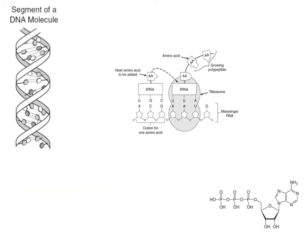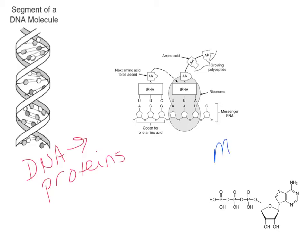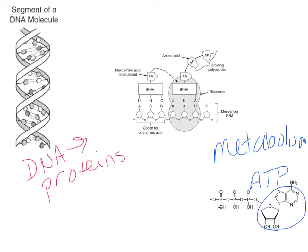Some other characteristics of living things: they all contain DNA — their instructions in the form of DNA — and that DNA is transcribed and translated into proteins. All living things also do metabolism, and when they do metabolism they require an energy source, usually in the form of ATP — adenosine triphosphate — which we use as a source of cellular energy.